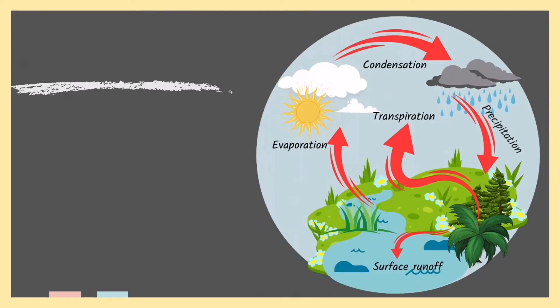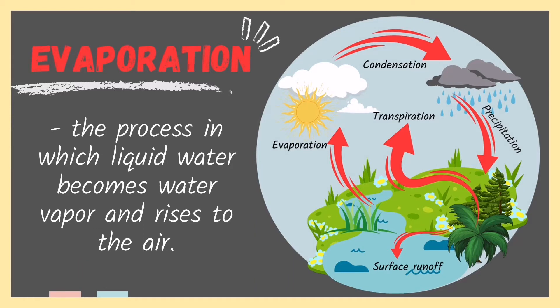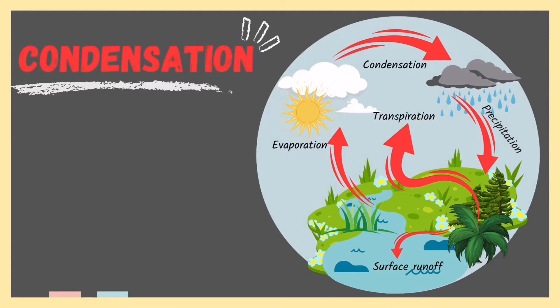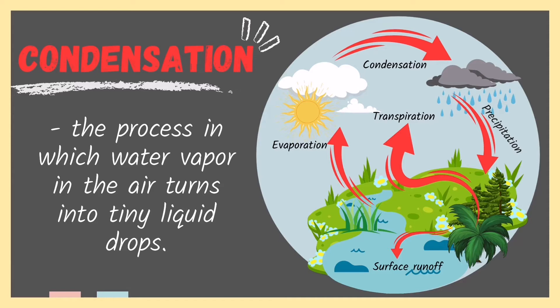The water cycle passes through different processes. These processes are evaporation, transpiration, condensation, and precipitation. Evaporation is the process in which liquid water becomes water vapor and rises into the air. If water is heated by sunlight, it will evaporate and become water vapor. Condensation is the process in which water vapor in the air turns into tiny liquid drops. Condensing water forms clouds in the sky — the result of condensation is the formation of clouds.